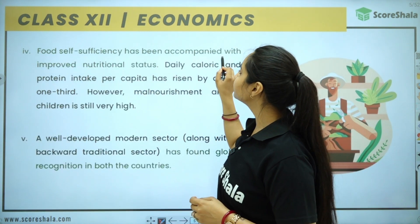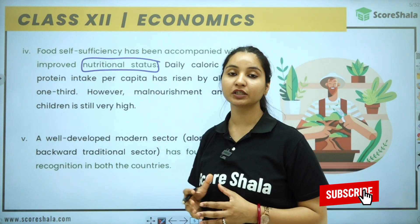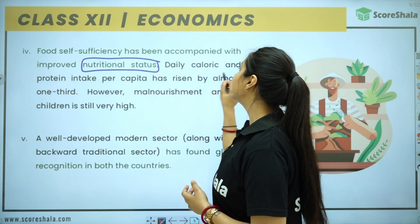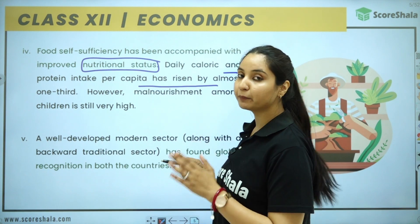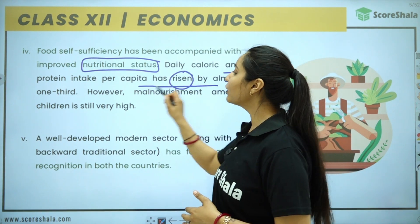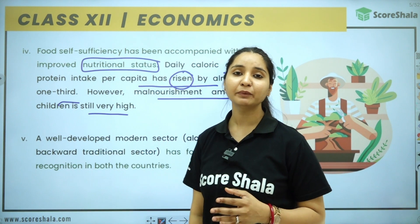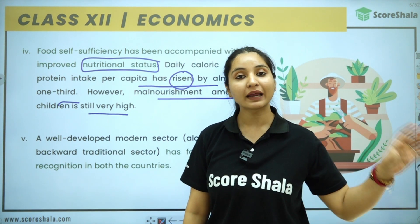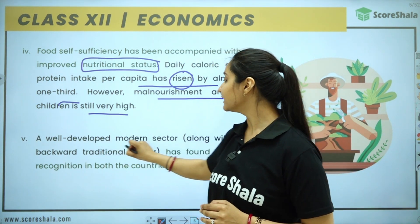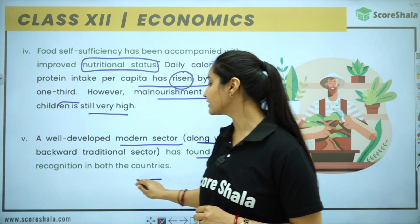Food self-sufficiency has been accompanied with improved nutritional status. Both countries have maintained nutritional status alongside food self-sufficiency. Daily caloric and protein intake per capita has risen by almost one-third. However, malnourishment among children is still very high. A well-developed modern sector along with the backward traditional sectors has found global recognition in both countries.